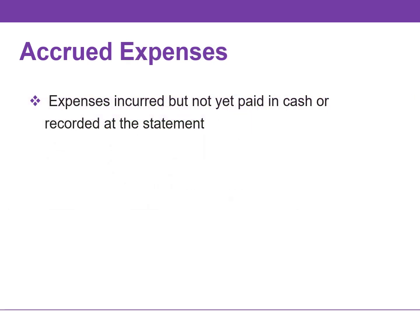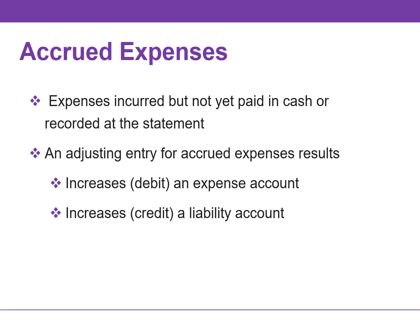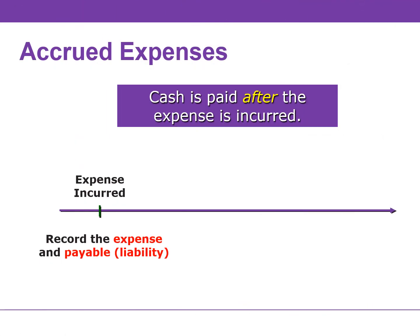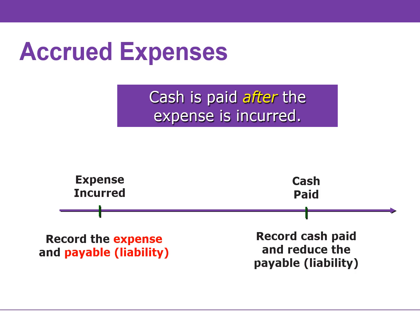Expenses incurred but not yet paid in cash or recorded at the statement date are called accrued expenses. Companies make adjustments to record the obligation that exists at the balance sheet date and to recognize the expense. An adjusting entry for accrued expenses results in an increase or debit to an expense account and an increase or credit to a liability account. When cash is paid after the company incurs an expense, a liability account must be established. When the cash is actually paid, we will decrease cash as well as reduce the payable or liability. If we pay the liability, the obligation no longer exists.